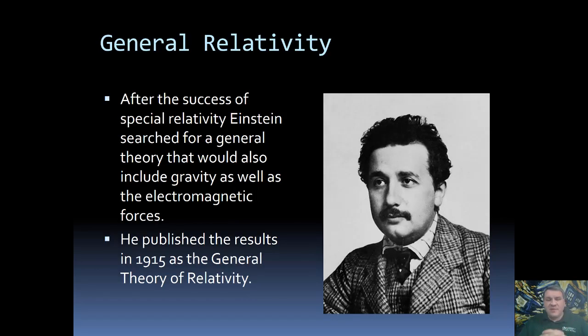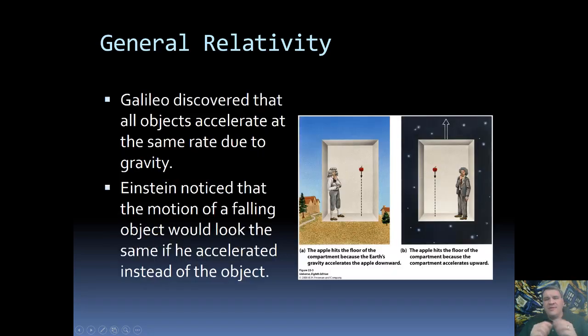So after the success of special relativity, Einstein wanted to form general relativity, one that did include gravity. Remember, the special theory of relativity is special because it does not include gravity. The general theory of relativity was published in 1915.